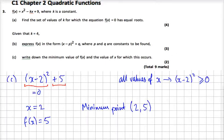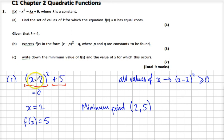Looking back at our answer: for our graph, f of x — I call it y so I can plot it — the minimum point is when x equals 2. Notice that even though it says minus in the bracket, the x-coordinate is positive, and the y-coordinate is also positive here. Thank you.